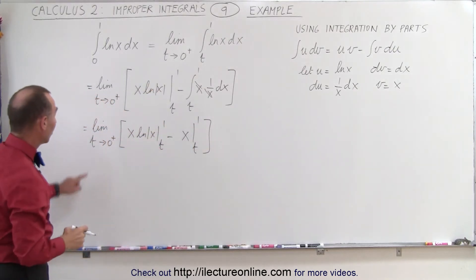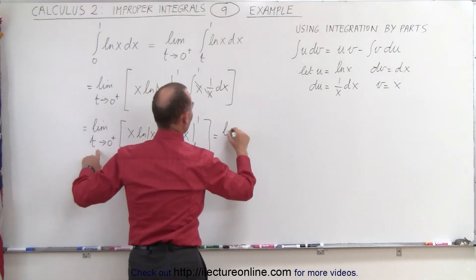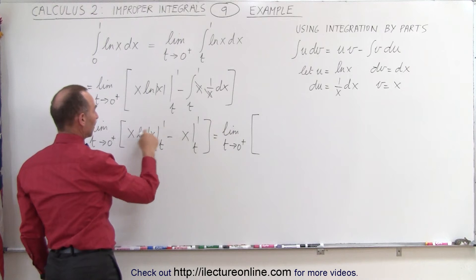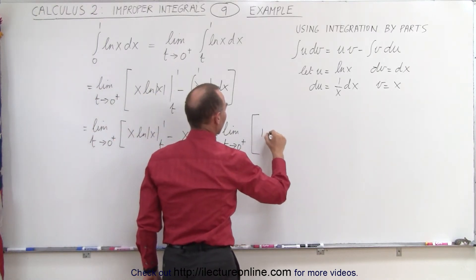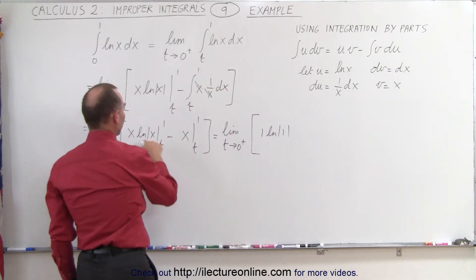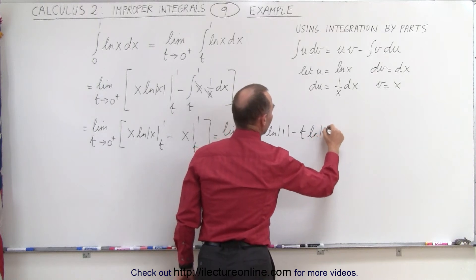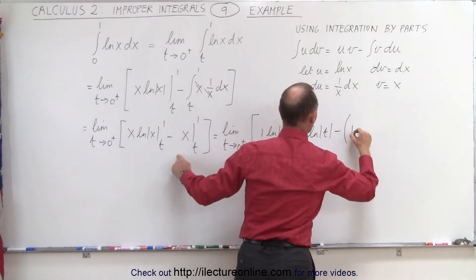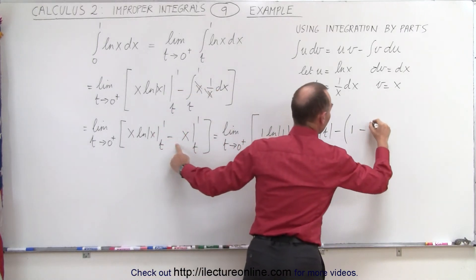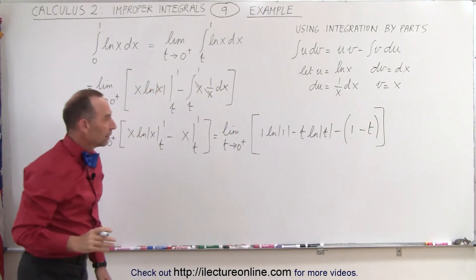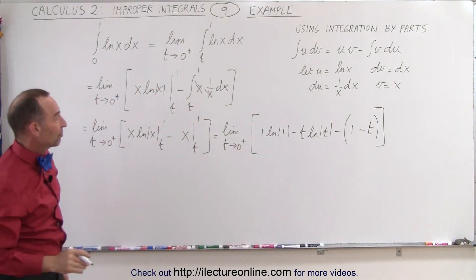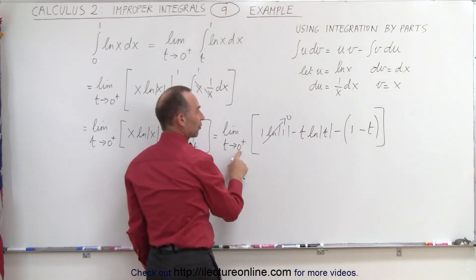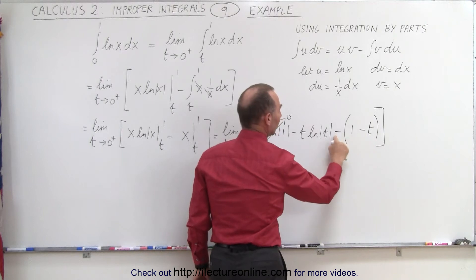This can be written as the limit as t goes to 0 from above of x times the natural log of x evaluated from t to 1, minus x evaluated from t to 1. Now let's plug in those limits. We get 1 times the natural log of 1, minus t times the natural log of t, then minus the quantity 1 minus t. The natural log of 1 is 0, so that term goes to 0, and plugging in 0 for t gives us 1 minus 0, so we simply have minus 1.